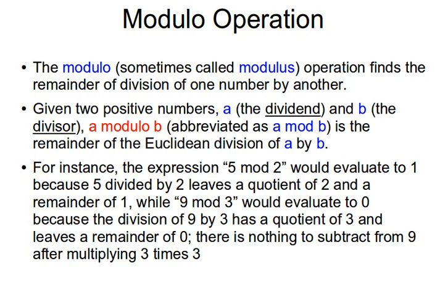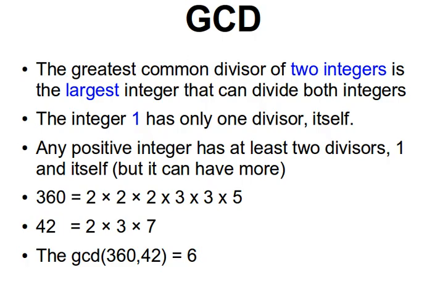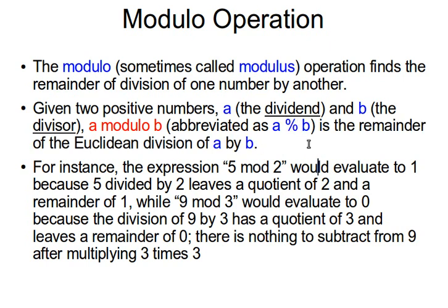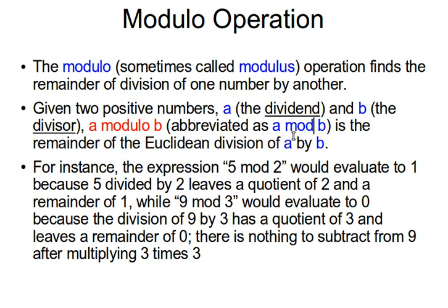Another thing I want to introduce here — though I'm assuming you're familiar with it — is the modulo operator. The modulo operation finds the remainder of division of one number by another. The material here is from Wikipedia. Given two numbers a and b, 'a modulo b' — sometimes abbreviated as 'a mod b', or 'a % b' in programming languages like Java — returns the remainder of the Euclidean division of a by b.